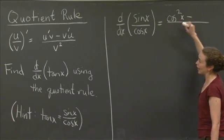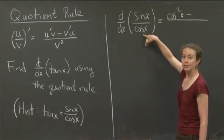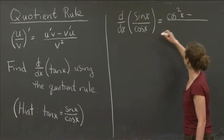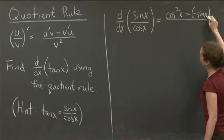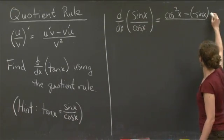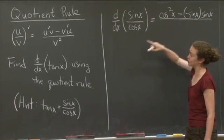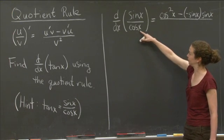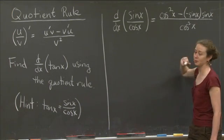Then I have to subtract v prime u. The derivative of cosine x is negative sine x. I'll write that down. Then I bring the u along for the ride, so I multiply by sine x here. And then I take v squared in the denominator from the formula. v, again, is cosine x, so I take cosine squared x in the denominator.